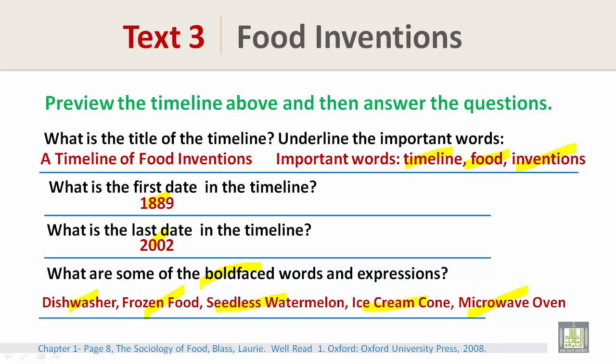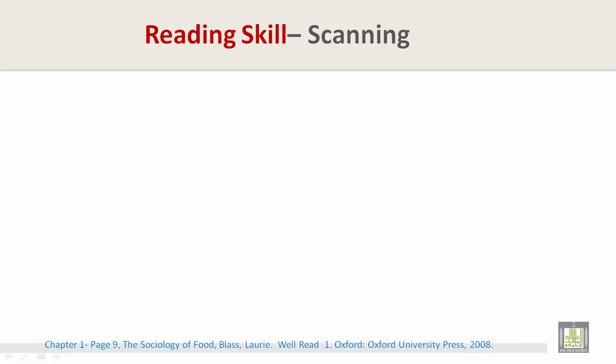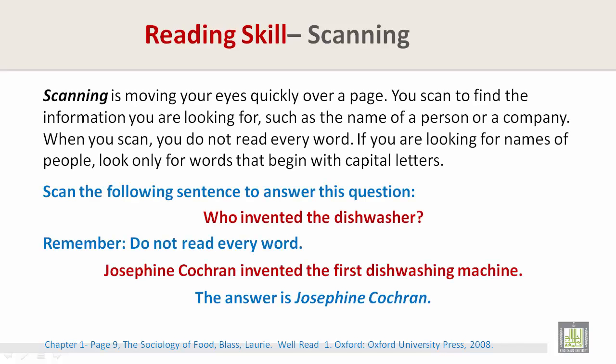Reading skill: scanning. Scanning is moving your eyes quickly over a page to find specific information you are looking for, such as the name of a person or a company. When you scan, you do not read every word. If you are looking for names of people, look only for words that begin with capital letters. Scan the following sentence to answer this question: who invented the dishwasher? Remember, do not read every word.